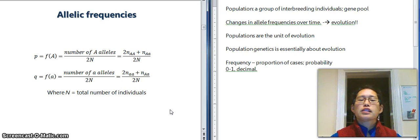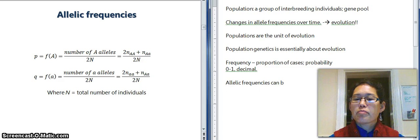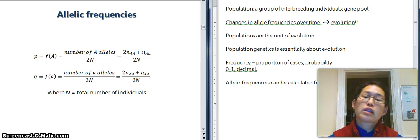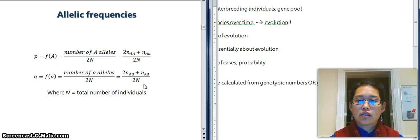We can also do something similar with allelic frequencies. So you can just count up the number of alleles. So allelic frequencies can be calculated from either genotypic numbers, so numbers of the genotypes, and that's what's going on here, or from genotypic frequencies.